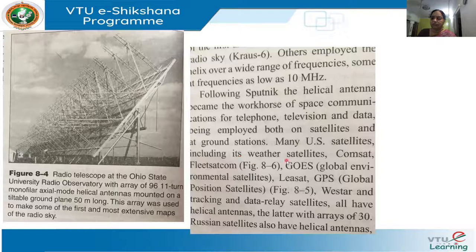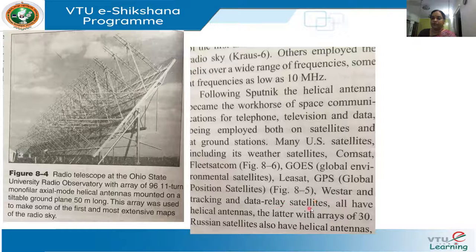Many US satellites including weather satellites, Comstat, Fleetstat Com, GOES (global environmental satellites), Leastat, GPS (global positioning satellites), Vestar, and tracking and data relay satellites all have helical antennas. Data relay satellites have arrays of 30 helical antennas. Similarly, Russian satellites also have helical antennas.